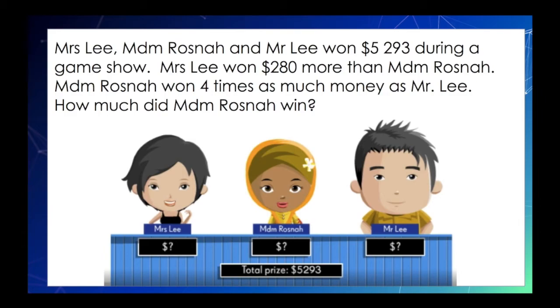Problem number one. Mrs. Lee, Madam Rosnah, and Mr. Lee won $5,293 during a game show. Mrs. Lee won $280 more than Madam Rosnah. Madam Rosnah won four times as much money as Mr. Lee. How much did Madam Rosnah win?